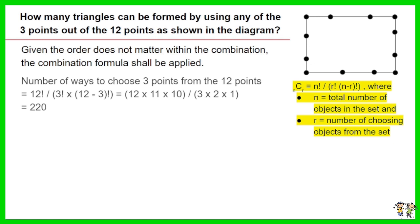Number of ways to choose 3 points from the 12 points equals 12 factorial divided by the outcome of 3 factorial times the result of factorial of 12 minus 3. Work out the equation, it is equal to 220.